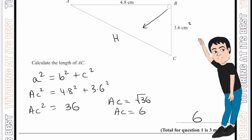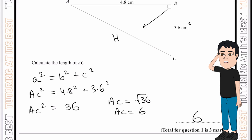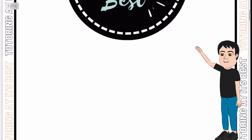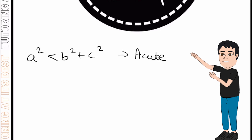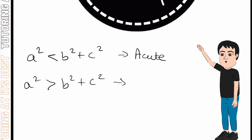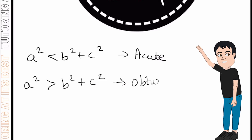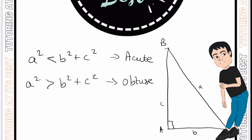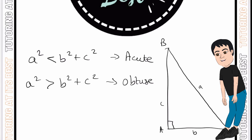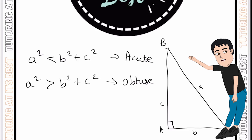One thing to note is that Pythagoras' theorem only works for right-angled triangles, but you can use it to test whether a triangle has a right angle or not. If a² is less than b² + c², the angle is acute. However, if a² is greater than b² + c², then angle A would be obtuse. That's just one important thing to note.